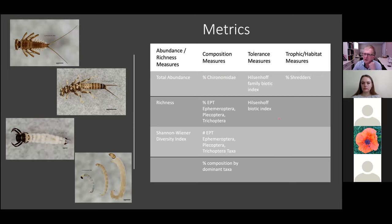The other thing that almost everybody always does is the Hilsenhoff Family Biotic Index. These factor in tolerance values. And finally, we'll go through trophic habitats. The one thing I want to focus on is the percent shredders, looking at feeding niches of all these organisms. So ten metrics, and away we go.